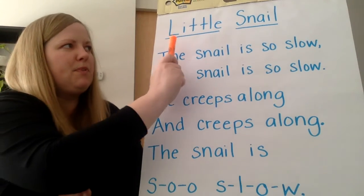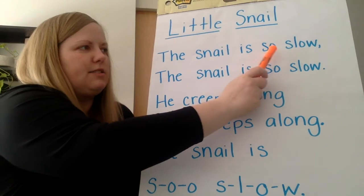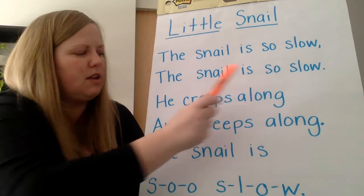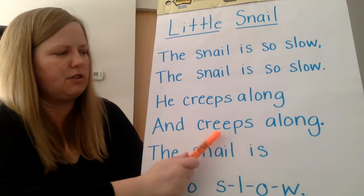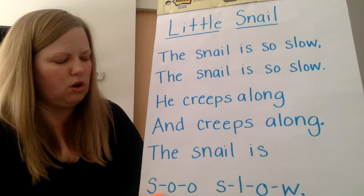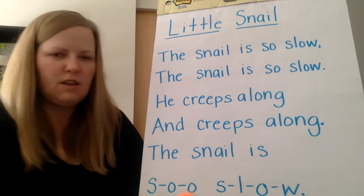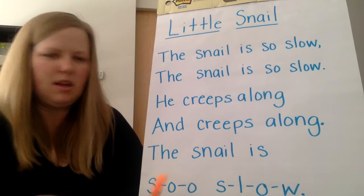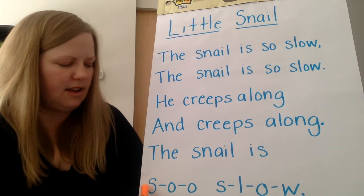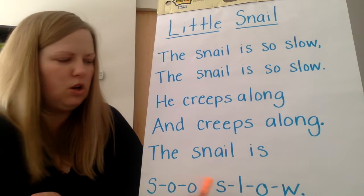Little Snail. The snail is so slow. He creeps along and creeps along. The snail is so slow. If you notice, the author of this poem made it so that the words 'so slow' at the end are spread out, so you're supposed to say it slowly: so slow.